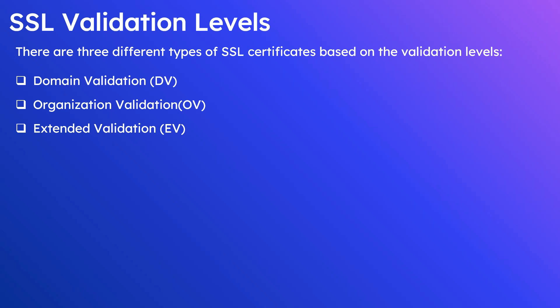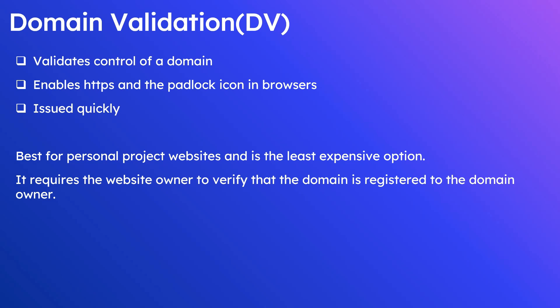Domain Validation (DV) validates the control of the domain — you should be proving your ownership of a domain before issuing the SSL certificate. This enables HTTPS and the padlock icon in browsers. It can be issued quickly because it only does the least validation: domain control validation. This is best for personal project websites and is the least expensive option, though also the least secure compared to OV and EV.